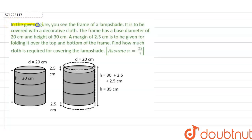In the given figure, you see the frame of a lampshade. It is to be covered with a decorative cloth. The frame has a base diameter of 20 cm and height of 30 cm. A margin of 2.5 cm is to be given for folding it over the top and bottom of the frame. Find how much cloth is required for covering the lampshade. Assume π = 22/7.